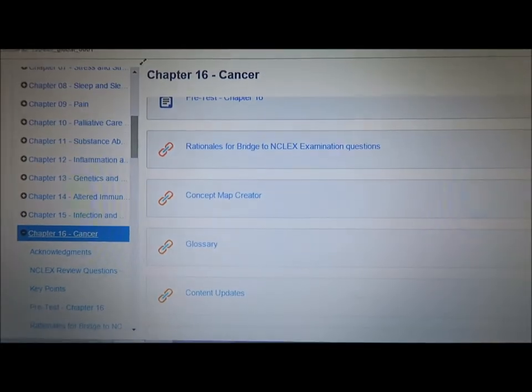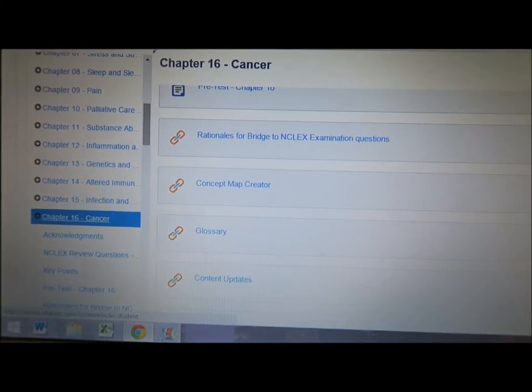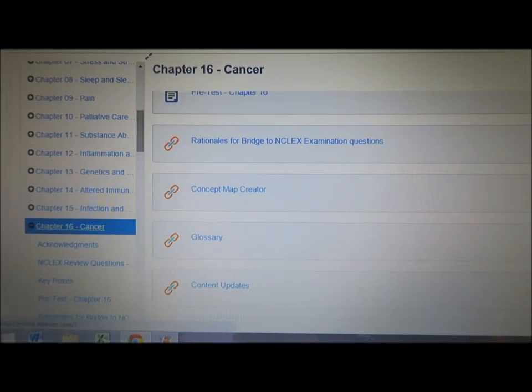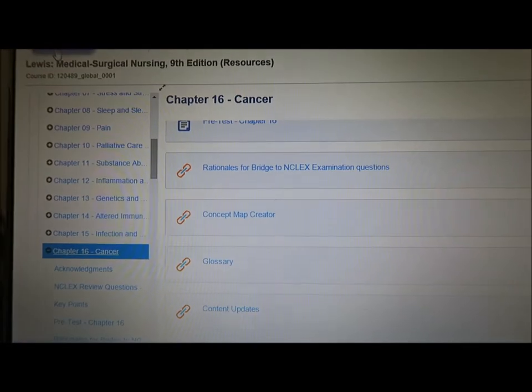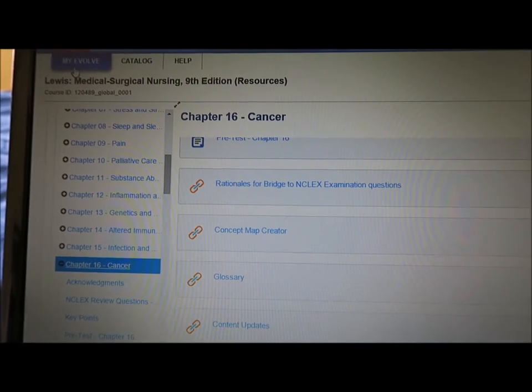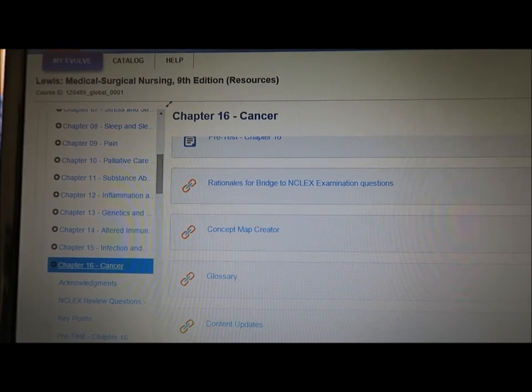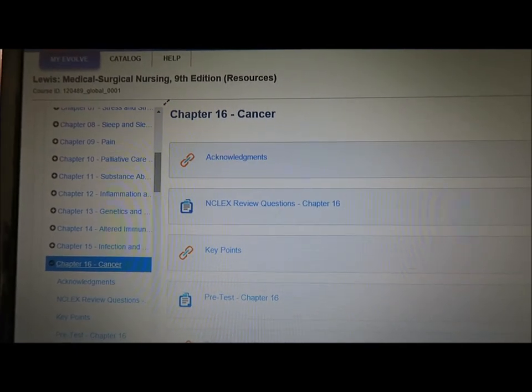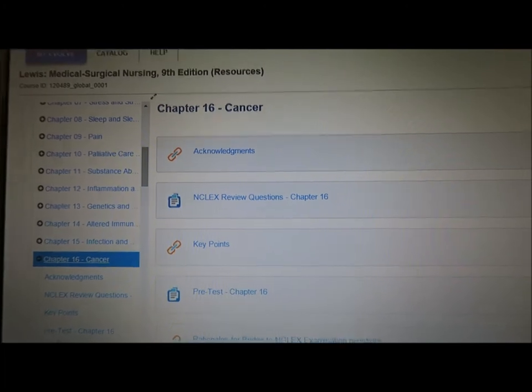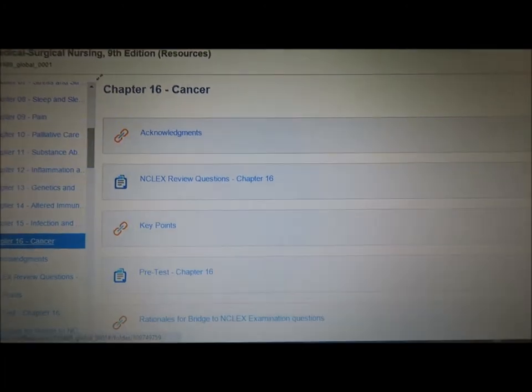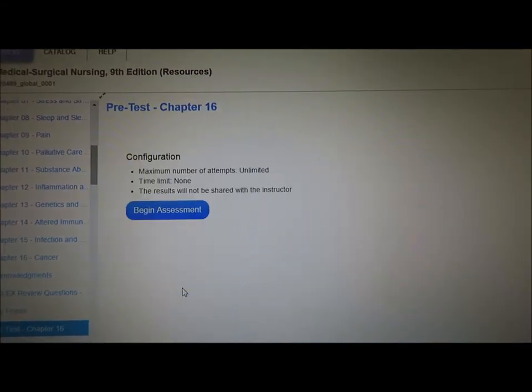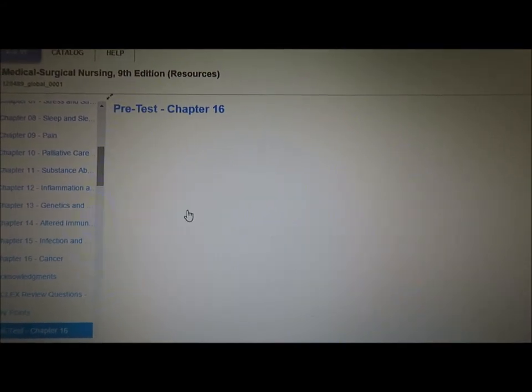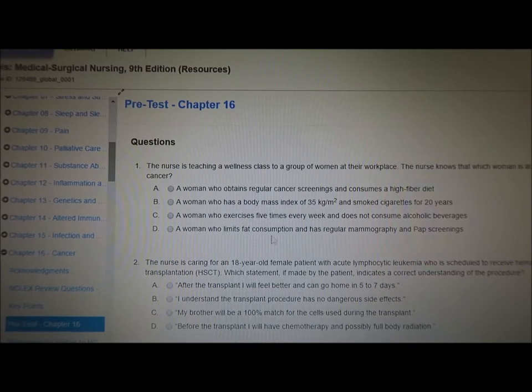If you guys do use an Elsevier textbook, I would definitely recommend going online and getting the access code or whatever you need to do to have it in your Evolve thing, because it gives you a lot of information and it's really helpful. The questions are pretty good as well. Some of the questions are the same things that they have in the book, but anytime you can give yourself something else to practice on is definitely a good idea.